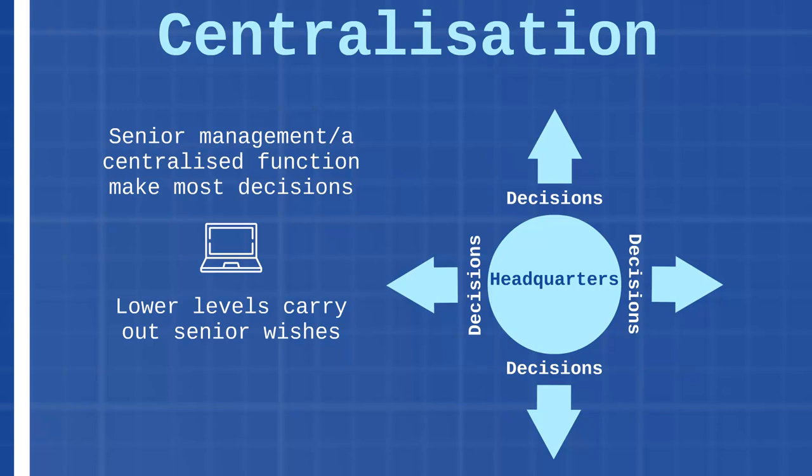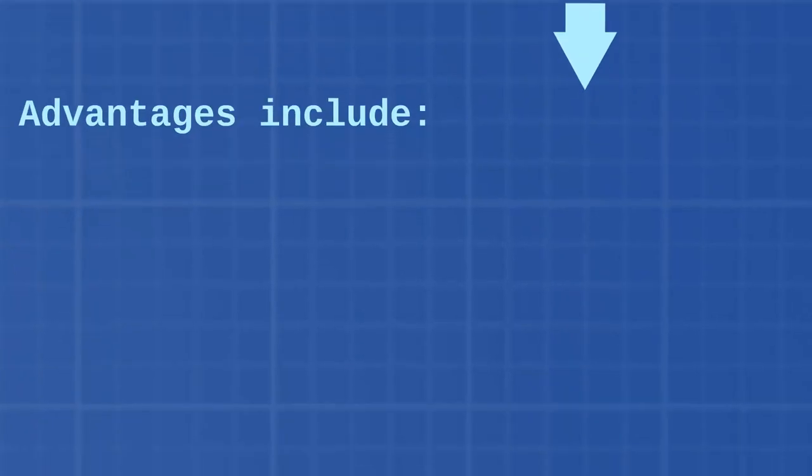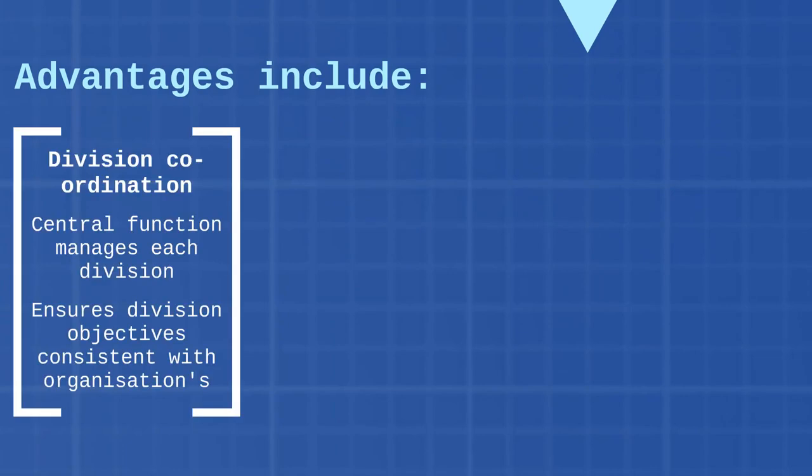There are a variety of advantages for an organization using centralization. One problem with divisional structures is that they find it difficult to communicate and there could be a replication of tasks because each division is working separately. With a centralized function, decisions can be made centrally so that the organization knows that the decision making for each division is all aligned and the divisions are moving forward together in a coordinated way, helping the organization hit its objectives.